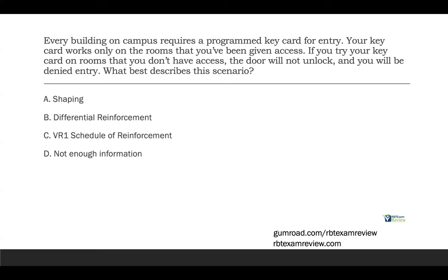You're receiving reinforcement from door A. Door B is putting your behavior on extinction. You already know how to do the behavior — scanning the key card — you're just receiving reinforcement for one stimulus, not the other. Differential reinforcement is reinforcing one behavior while putting other behaviors on extinction. If you scan door A, you get reinforcement. If you scan door B, you don't. You'll eventually learn you can only go to door A. Answer C — VR1 schedule — no, because no matter how many times you scan door B, you'll never get in. Answer D — not enough information — nope, there's plenty here. Our answer is B, differential reinforcement.